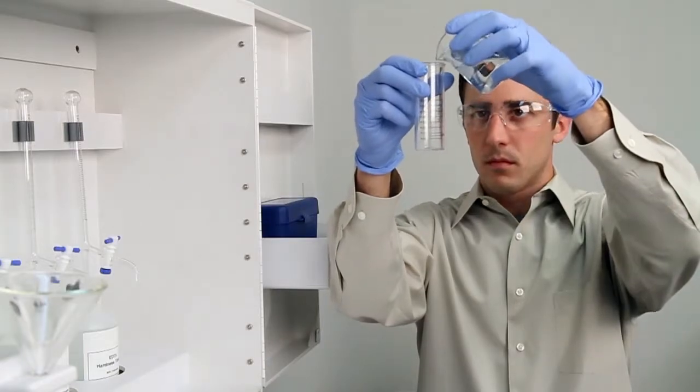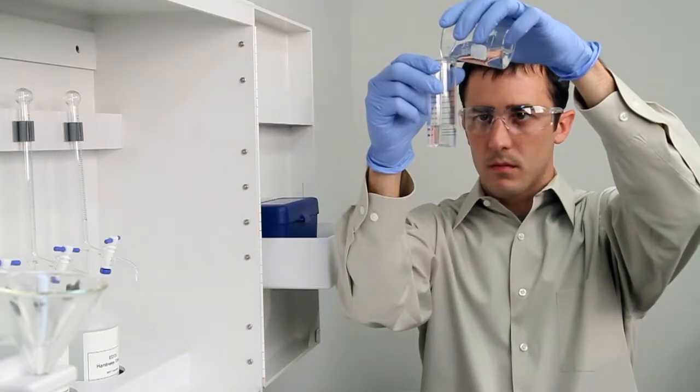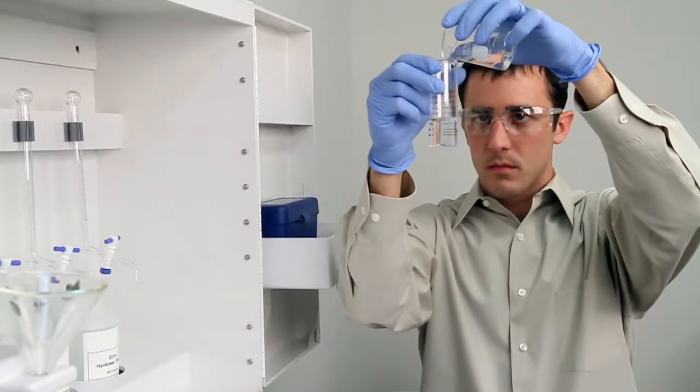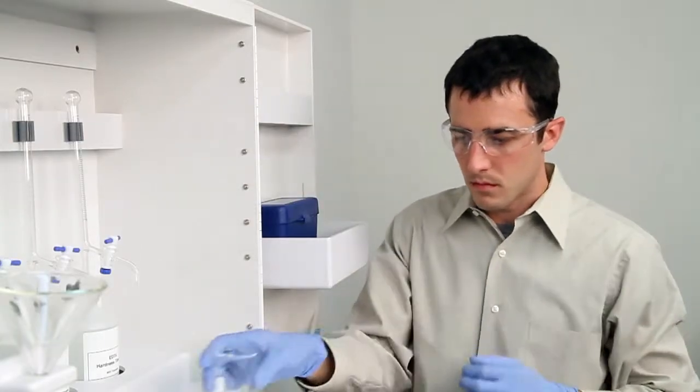To get an accurate sample, hold the vial close to eye level. Accuracy is very important during this step. Once you feel you have an accurate sample, place the vial on a level surface and bend down to eye level to verify.